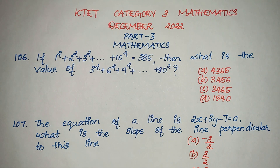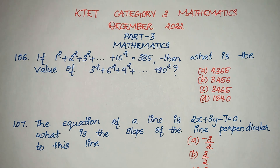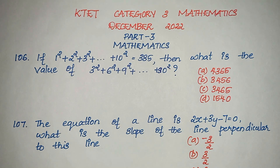Hello everyone and welcome back to our YouTube channel. We are going to ask question 106. If 1 square plus 2 square plus 3 square plus etc. plus 10 square is equal to 385, then what is the value of 3 square plus 6 square plus 9 square plus etc. plus 30 square?